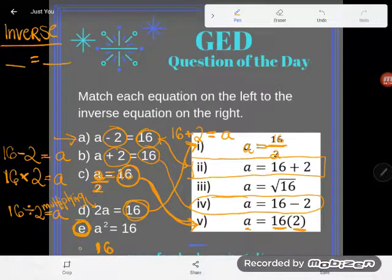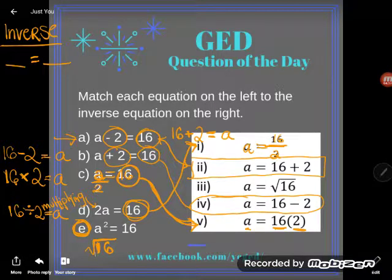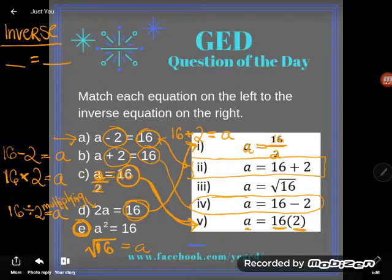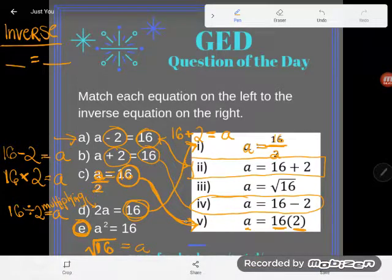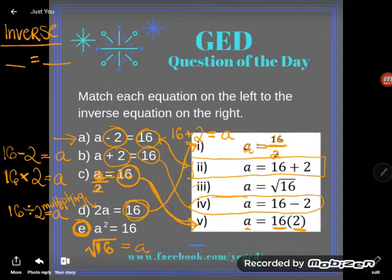Well, turns out the opposite of squaring is square root. I'm going to draw that little radical checkmark house over my 16, and that'll get me back to find a. So there you go: to find a, I'd have to do the square root of 16. So the opposite of e is number three.